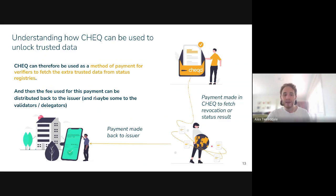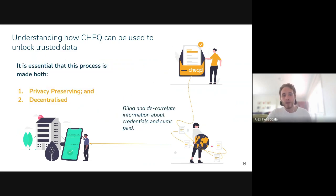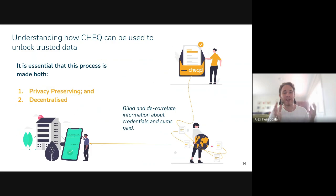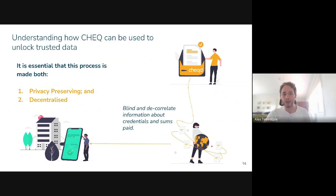The fee paid to the status registry can be distributed back to the issuer, creating a cyclical incentivized payment mechanism, and maybe some of that fee also goes to validators and delegators. It's important to note that this process has to be both privacy preserving and decentralized. The status registry can't just be us spinning up a server — it needs to be robust, and it cannot correlate data from the credential being presented with the fee being paid. The issuer can't know who's using their credentials, and there can be no way of surveilling this information. We need to be able to blind and de-correlate information at the status registry level.